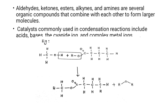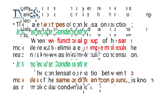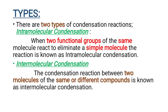The catalysts commonly used in condensation reactions are acid, base, and cyanide ions. For example, when methanol combines with butyric acid and forms a larger compound with the elimination of water. There are two types of condensation reaction: the first is intramolecular condensation, and the second is intermolecular condensation.